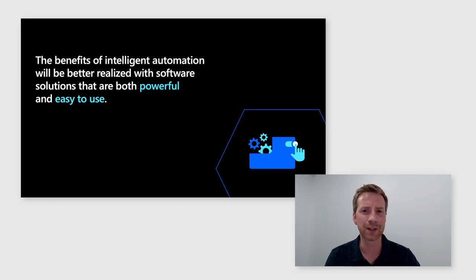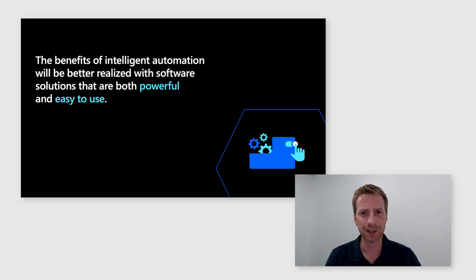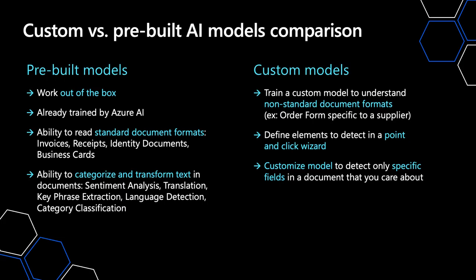Just because it's easy to use, it doesn't mean that it isn't powerful. All of our AI Builder models generated through an easy point-and-click wizard end up generating a powerful Azure AI model in the backend with the same level of security and reliability that you'd expect from integrating directly through Azure AI developer APIs. There are two different categories of models you can leverage for document processing: pre-built models and custom models.